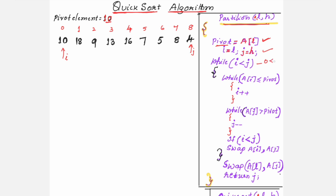Now we check whether I is less than J — I is 0, J is 8, so 0 less than 8 is true. The outer while loop executes. Inside, you check whether A of I is less than or equal to the pivot. A of I is 10, pivot is 10 — yes, true — so increment I by 1. Now A of I is 18. Whether 18 is less than or equal to 10? No, the condition is false, so it exits this while loop and enters the next while loop.